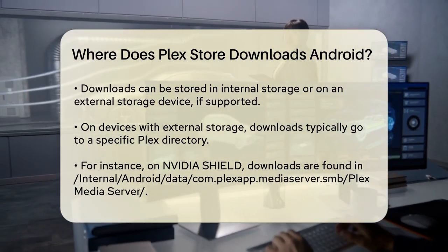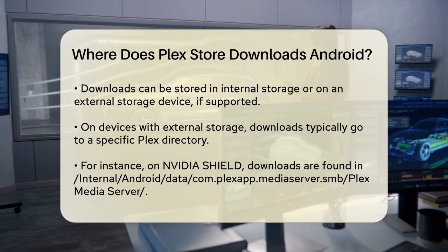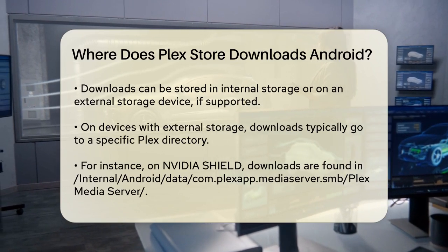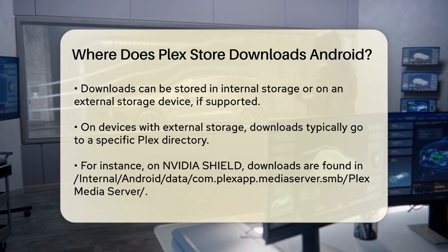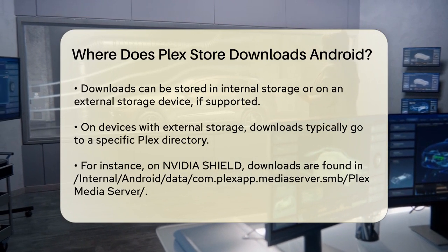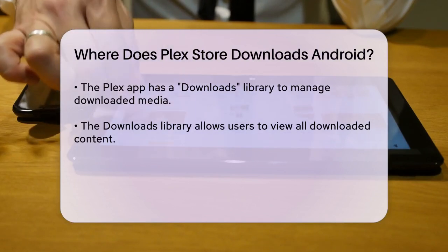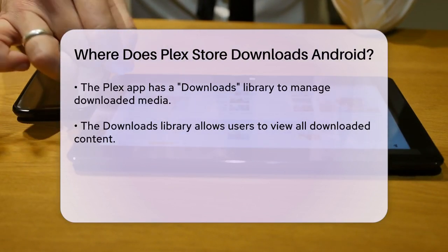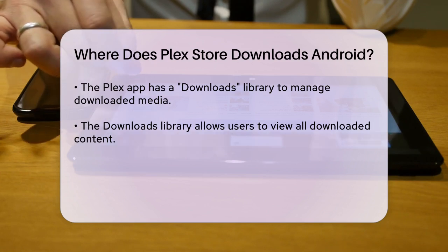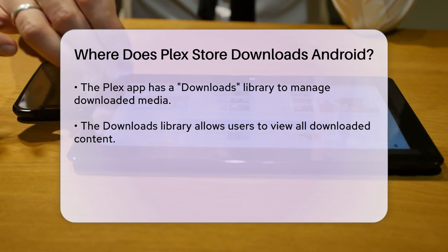For example, if you're using an Android device with external storage capabilities, the Plex app will store the downloaded media in a directory related to the Plex app. On devices like the Nvidia Shield, downloads would typically be stored in a directory such as /internal/Android/data/com.plexserver.smb/PlexMediaServer, or on a removable storage drive if you've configured it that way.